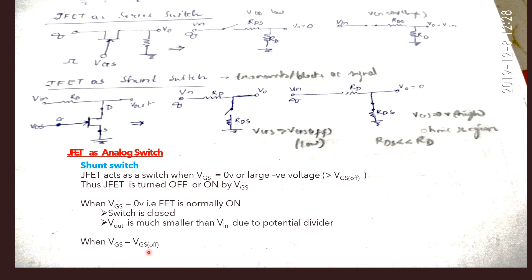When VGS is VGS OFF, the switch is open. You can see the switch is open. The FET is off, and you will find that this input is transferred to the output. VOUT is equal to VIN.